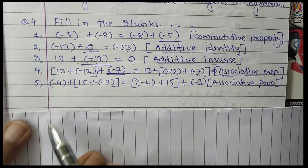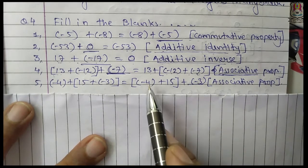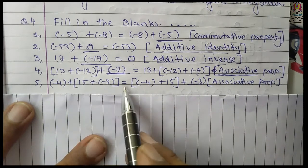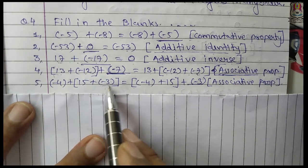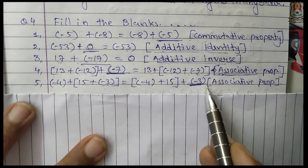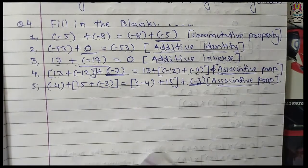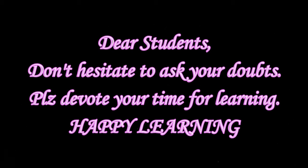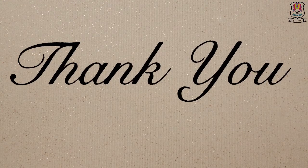The last one: minus 4 plus 15 plus minus 3, where the integers are grouped differently in brackets, but the answer remains minus 3. This is also the associative property, same as the previous one. Here comes the end of Exercise 1.2. If you have any doubt or query, you can ask me.